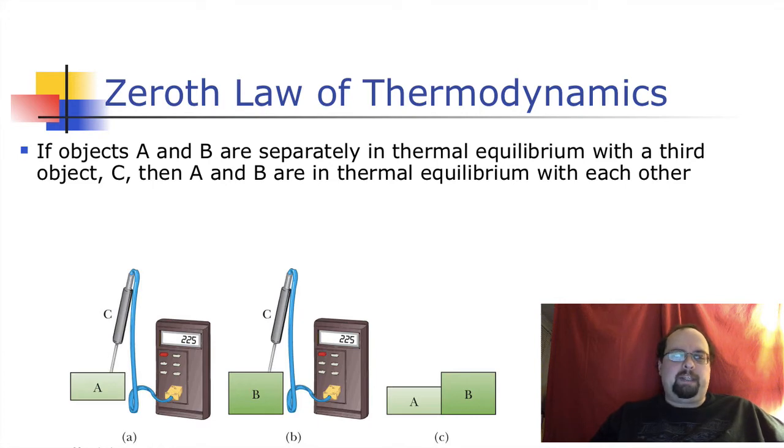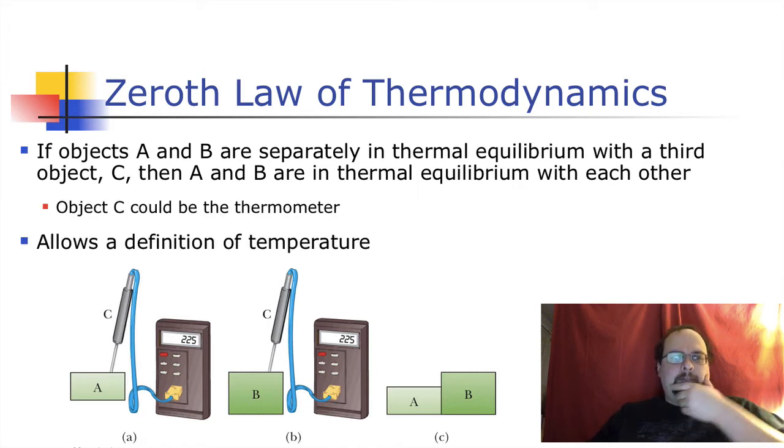Then they are also in thermal equilibrium with each other. So object C in this picture is the thermometer. When you measure the temperature of A, it's 225. You measure the temperature of B, it's 225. They must be at the same temperature. Therefore, they're in thermal equilibrium with each other. When you put A and B together, no heat will pass from one object to the other. So object C could be a thermometer, and that's one of the things that we do. It's how we measure temperature. By measuring temperature, we can tell that two things are in thermal equilibrium, even if they're not touching.